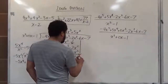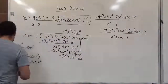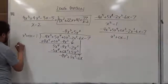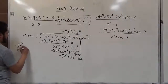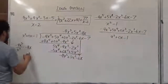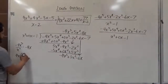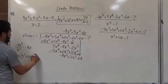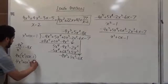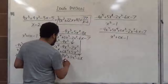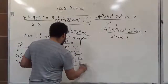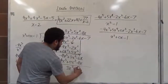We bring down the negative 6x term and repeat the process. The leading term is negative 4x to the third, divided by x squared, giving us negative 4x. We place that up top, then take the opposite, positive 4x, and multiply by x squared plus 0x minus 1, giving us 4x cubed plus 0x squared minus 4x. These cancel, leaving 3x squared minus 10x.